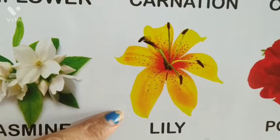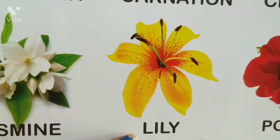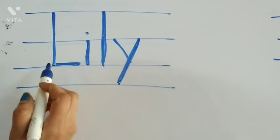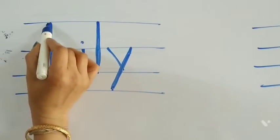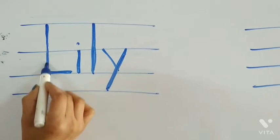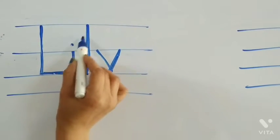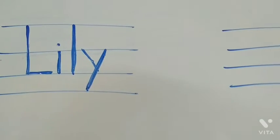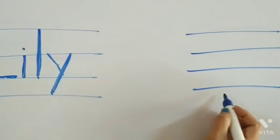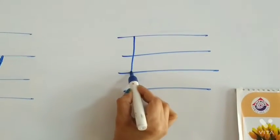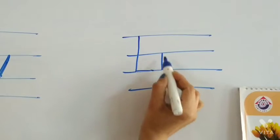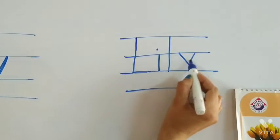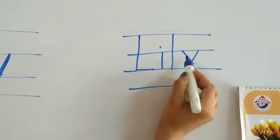Today we will write lily. L-I-L-Y, lily. How to write lily? L-I-L-Y, lily. Write again: L-I-L-Y, lily.